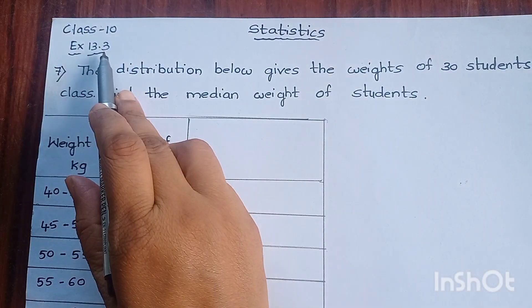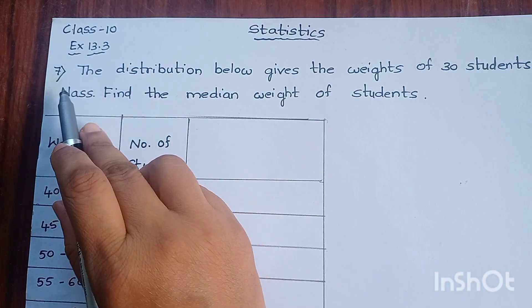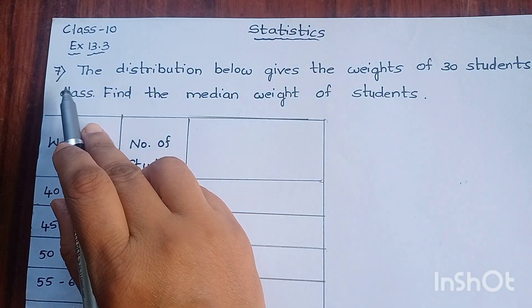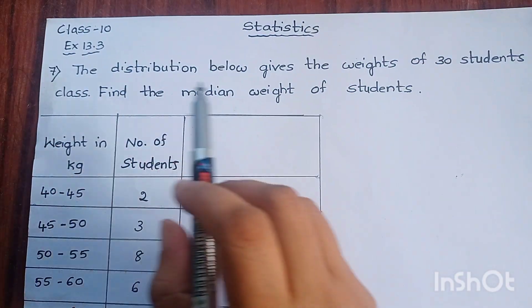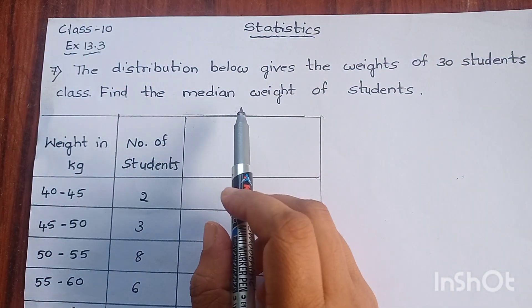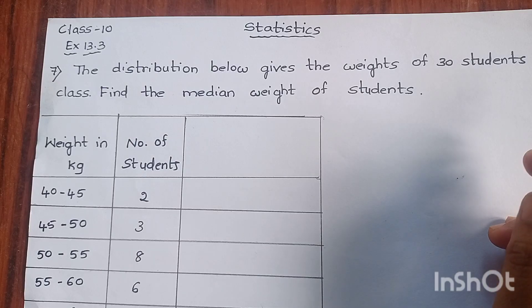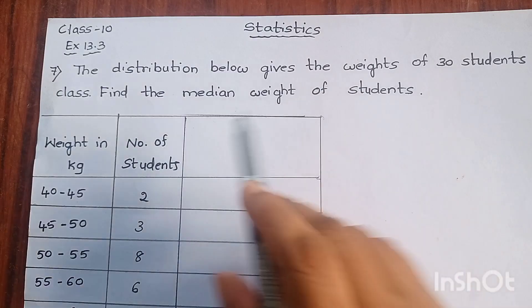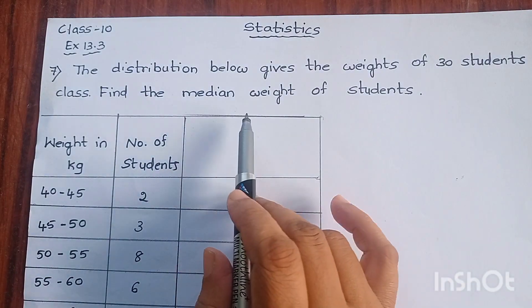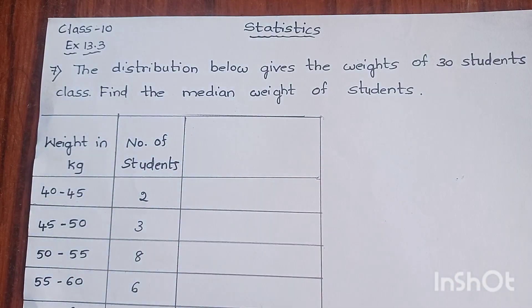Exercise 13.3, question: The distribution below gives the weights of 30 students of a class. Find the median weight of the students.